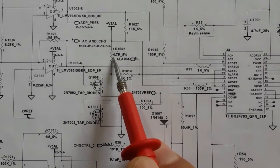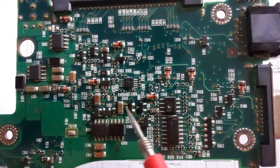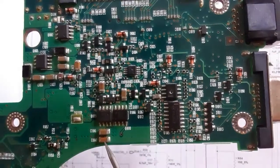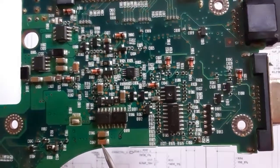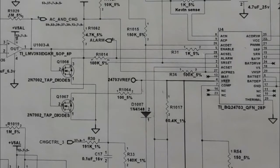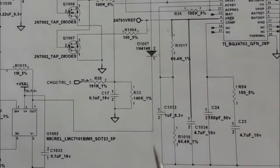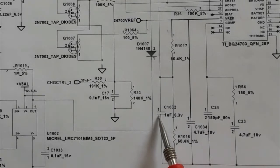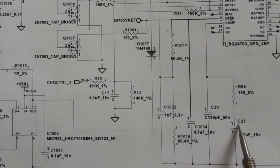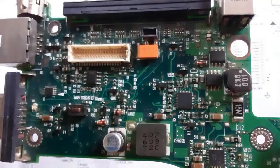Here we have ceramic capacitors. This is not a polarized capacitor — in the schematic the ceramic capacitor has no plus or minus symbol. This is a normal ceramic capacitor, also called a PF capacitor.